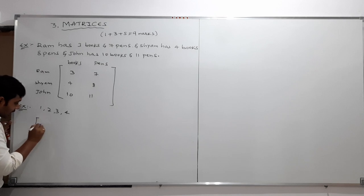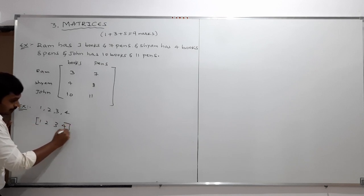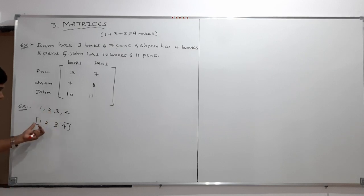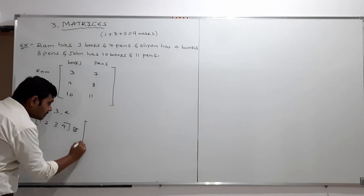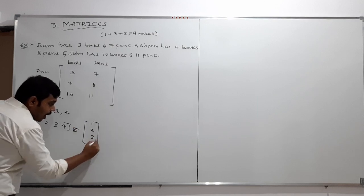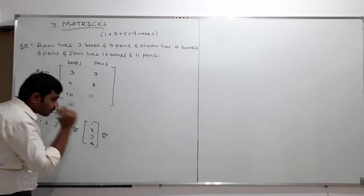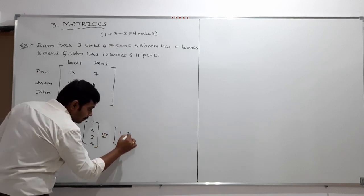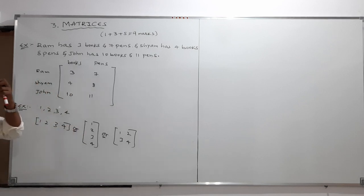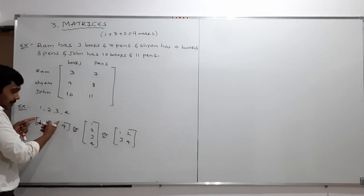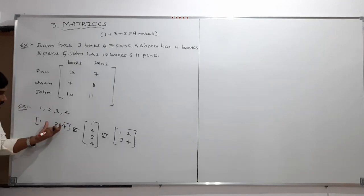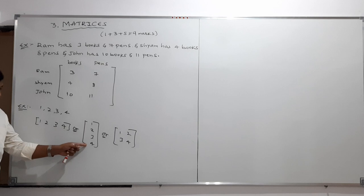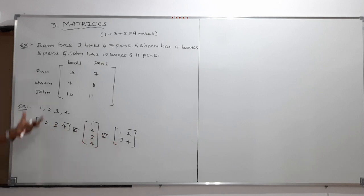These 4 numbers I can write within a bracket like this: 1, 2, 3, 4 arranged in one way. Or I can arrange them differently — 1, 2 on one row and 3, 4 on another. Or I can write all four in a single column: 1, 2, 3, 4. The given numbers are written within the bracket in a particular order — this also we can call it as matrices.